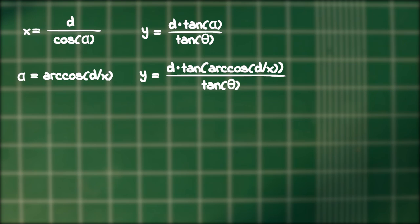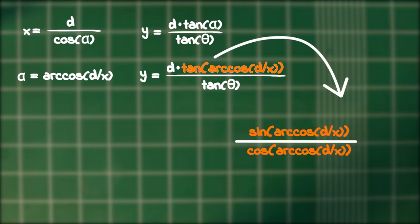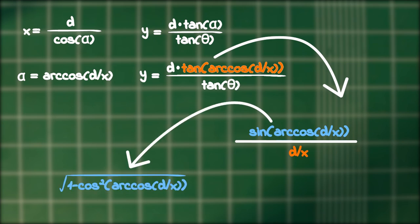And so is the case here. If we expand the tangent into sine over cosine, then the denominator simply becomes d over x. For the numerator, we can replace the sine by the square root of 1 minus cosine squared. Now this simply turns to...